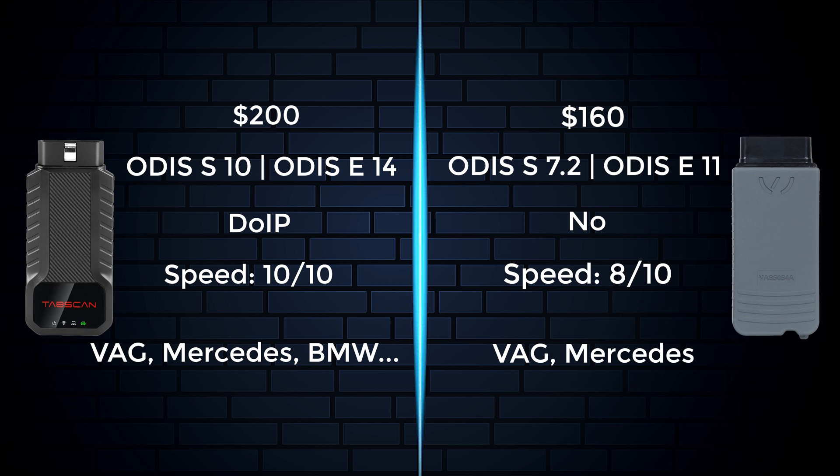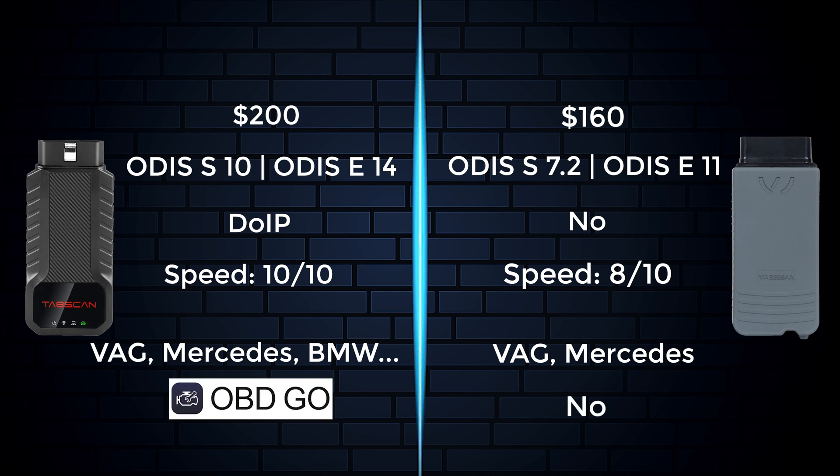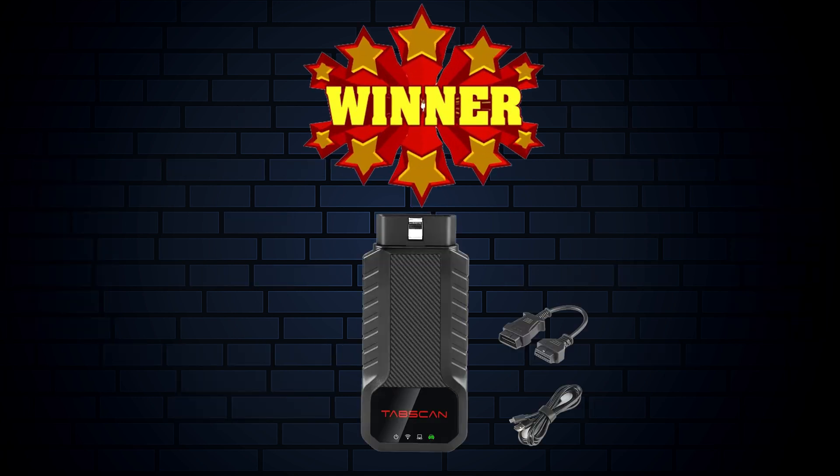But if you spend more money, with the special function of the TabSkin you can interface with the engine of many other car manufacturers through the OBDGO software on your phone. This is also what makes the TabSkin device superior compared to the VAS5054A, even though the VAS5054A is very quality and stable for technicians.